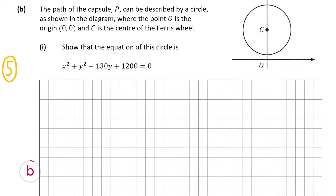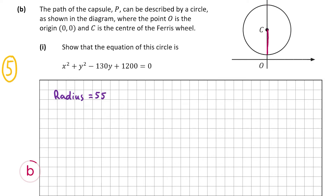The center is point C. The distance from the origin to the top of the circle is 120 meters, and the bottom of the wheel is 10 meters above the ground, so the diameter is 110 meters, making the radius 55 meters. Since C is 55 meters above the lowest point (which is 10 meters up), C is 65 meters above O. The x-value of C is 0, so the center is (0, 65).